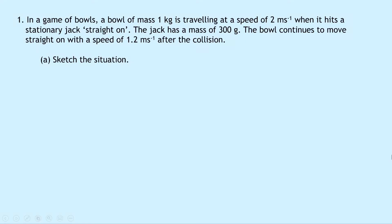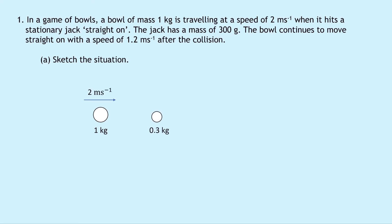Question one says that in a game of bowls, a bowl of mass one kilogram is traveling at a speed of 2 meters per second when it hits a stationary jack straight on. The jack has a mass of 300 grams. The bowl continues to move straight on with a speed of 1.2 meters per second after the collision. Part A says to sketch the situation. So we've got our bowl of mass 1 kilogram moving to the right at 2 meters per second, colliding with a jack of mass 0.3 kilograms, which is stationary at 0 meters per second.